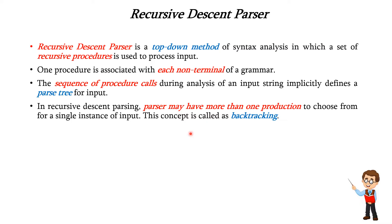In recursive descent parsing, parser may have more than one production to choose from for a single instance of input. This concept is called backtracking.